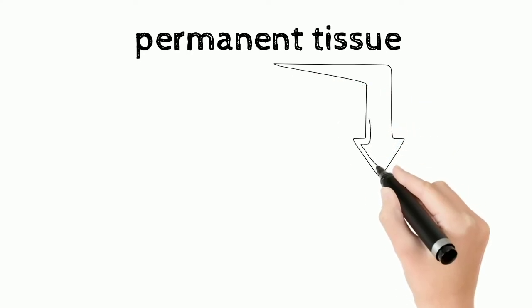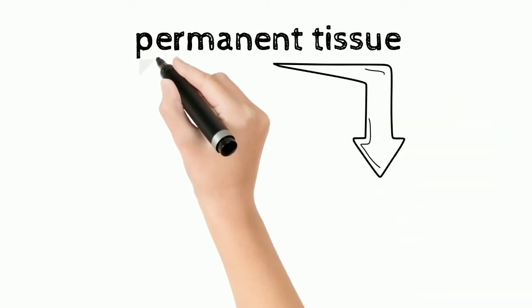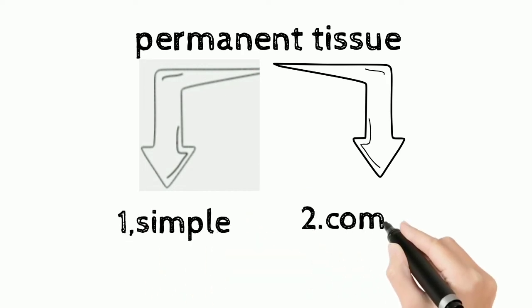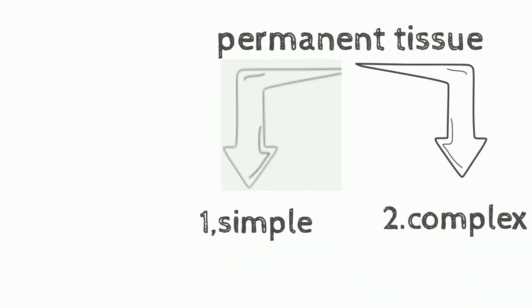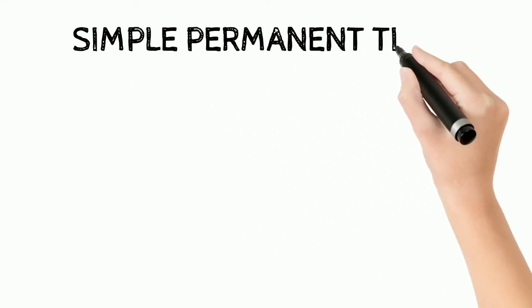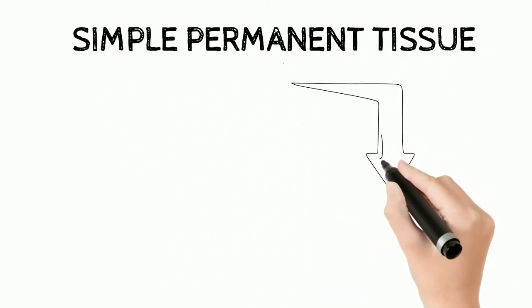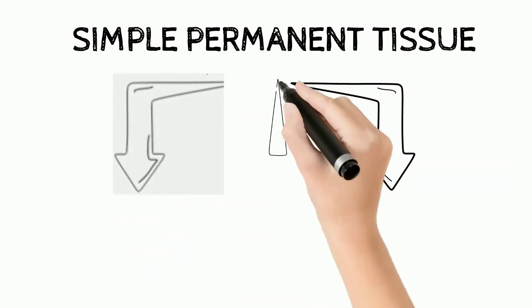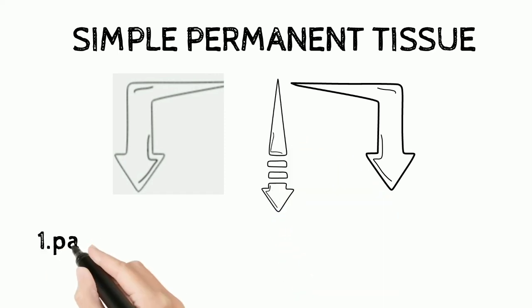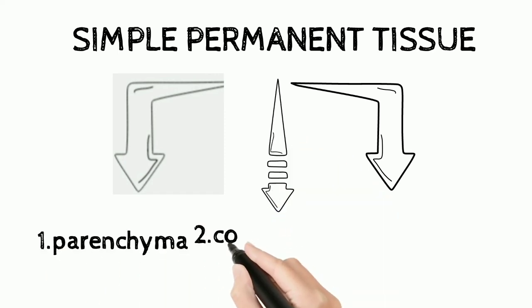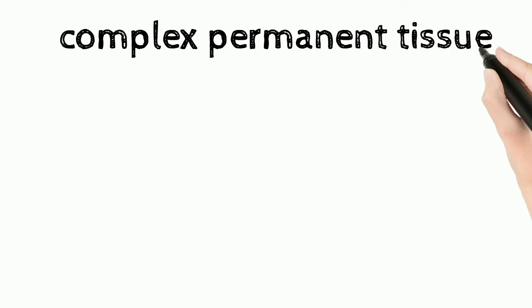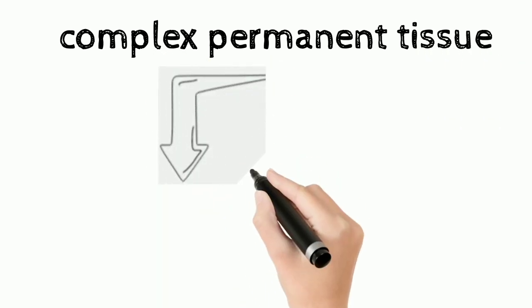Permanent tissues are also divided into two types: Simple Permanent tissues and Complex Permanent tissues. Simple Permanent tissues are divided into three types — Parenchyma, Collenchyma, and Sclerenchyma — and Complex tissues are also divided into two types: Xylem and Phloem.